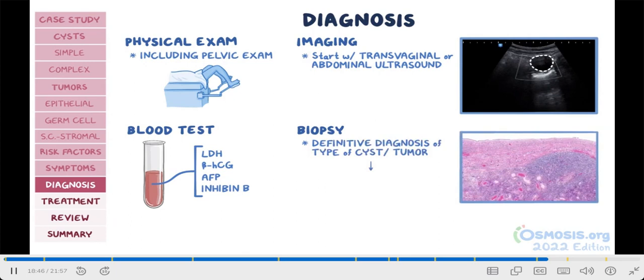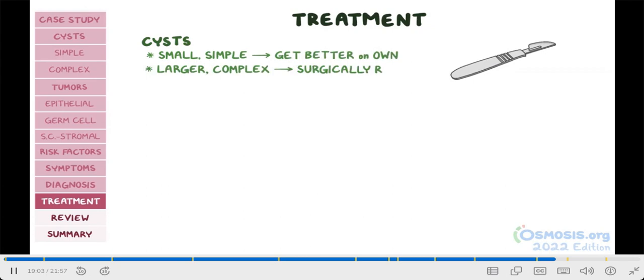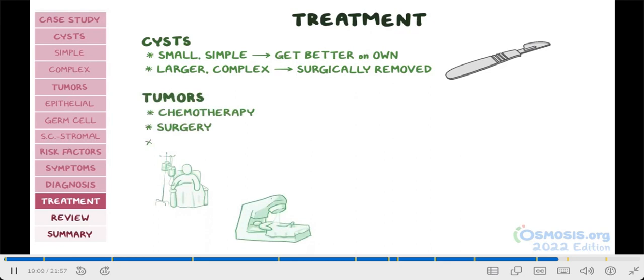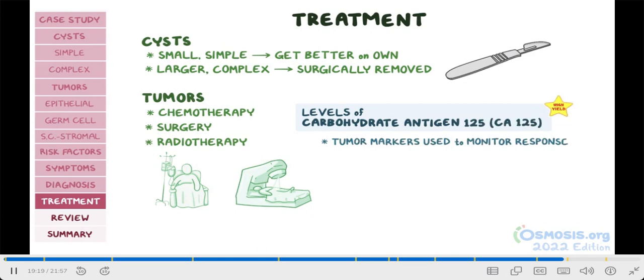CT or MRI scanning can be useful to assess if the tumor has spread. Treatment for ovarian cysts varies based on type and size. Small, simple cysts will usually get better on their own, whereas larger, complex cysts should be surgically removed. For ovarian tumors, treatment usually involves chemotherapy, surgery, and sometimes radiotherapy. For your exams, it's important to know that the levels of carbohydrate antigen 125, or CA-125, are tumor markers used to monitor response to therapy and potential relapse. It's not specific enough to be used for diagnosis or screening.